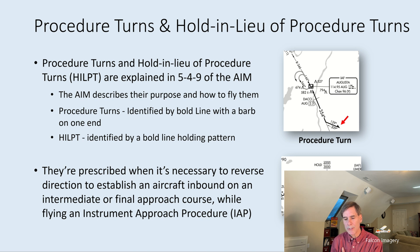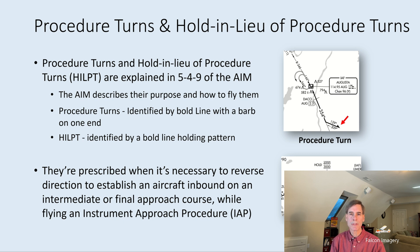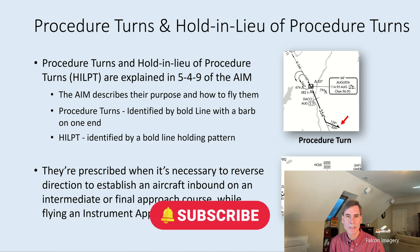These procedural turns and holds in lieu of procedure turns prescribe when it's necessary to do a reverse direction to establish an aircraft inbound on an intermediate or final approach course while flying an instrument approach procedure. Sometimes when you're approaching an initial approach fix, the heading you're on doesn't allow you to just turn inbound on the course, so these procedural turns help you get better established on the approach before turning inbound.